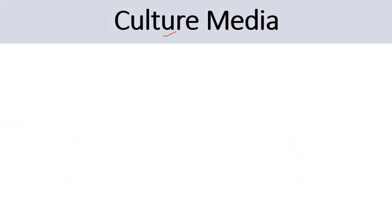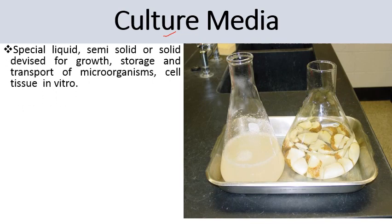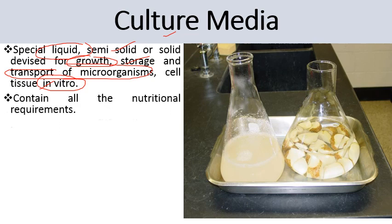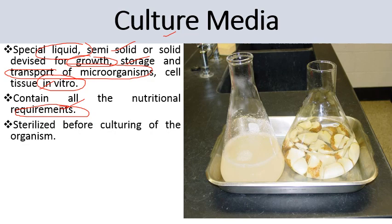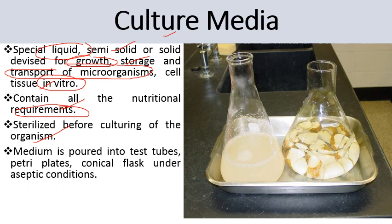Next comes culture media. This is the nutrient medium which may be liquid, semi-solid, or solid, which is used for the growth, storage, and transport of microorganisms, cells, or tissues in vitro. It contains all the nutritional requirements. This culture media is sterilized before culturing of the organism — it is made aseptic, meaning without any contamination. Then this medium is poured into test tubes, petri plates, or conical flasks under aseptic conditions.